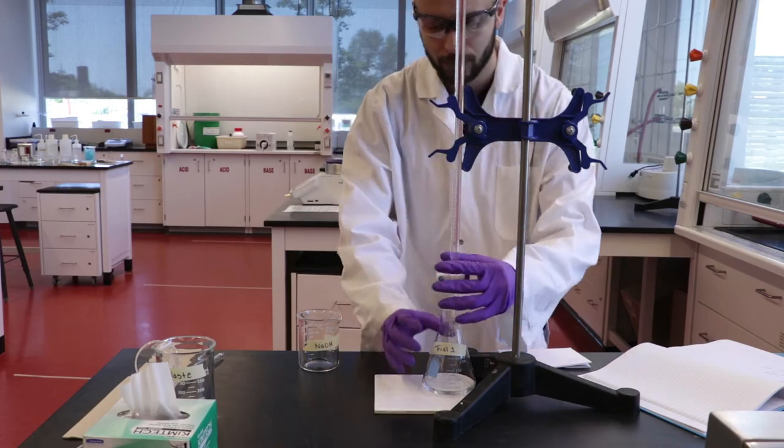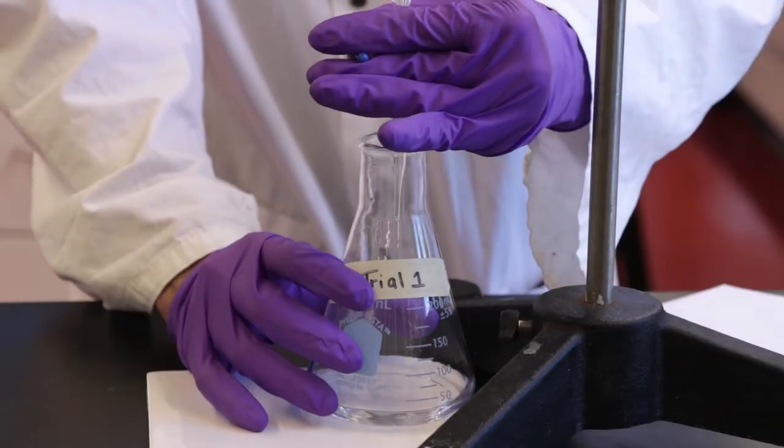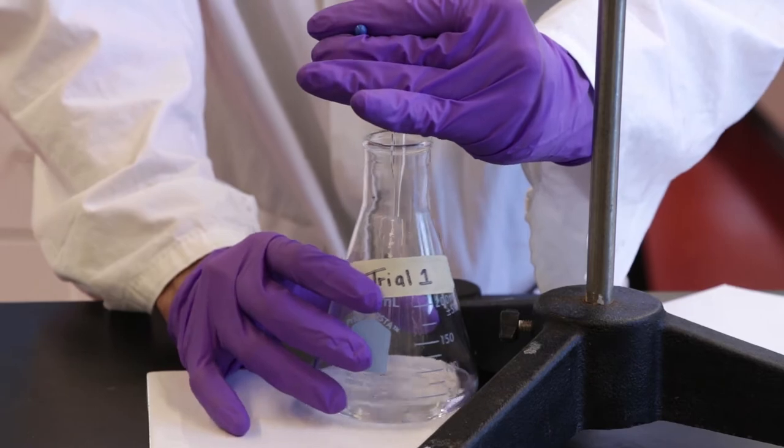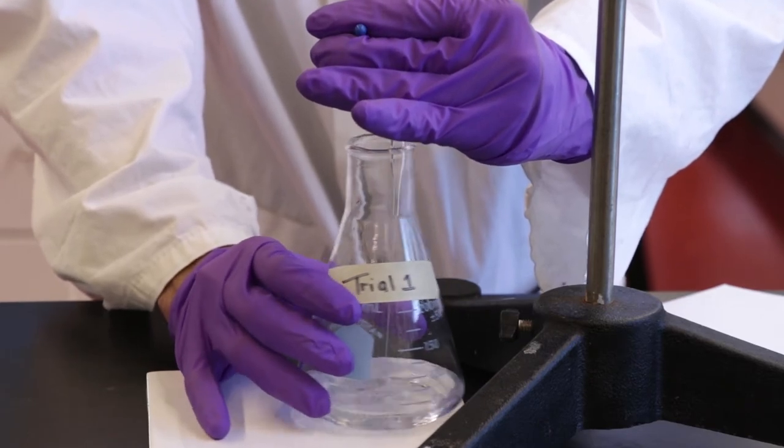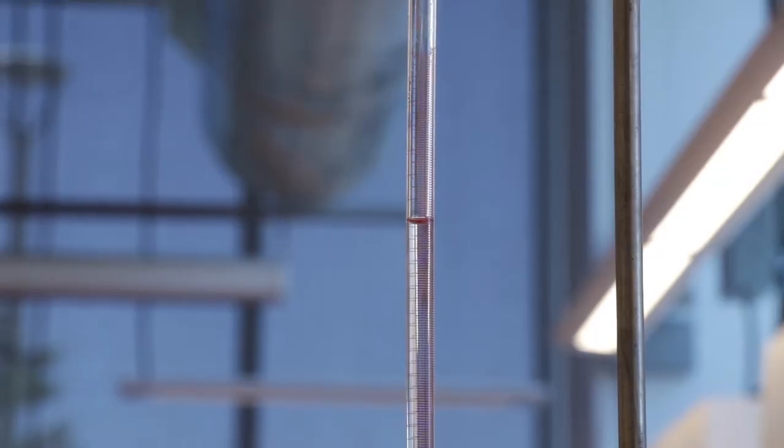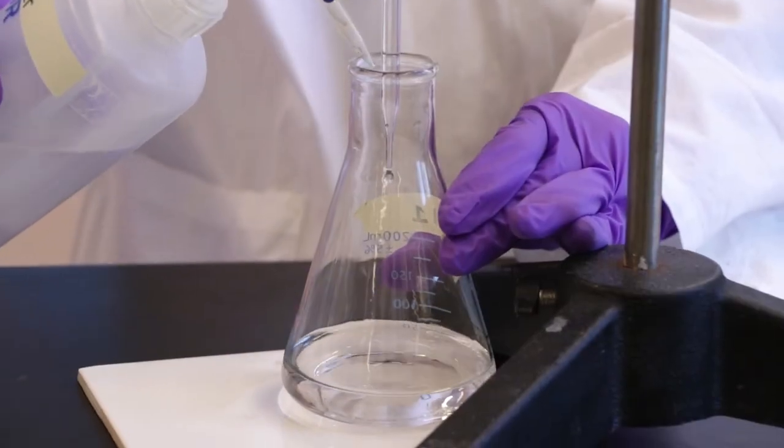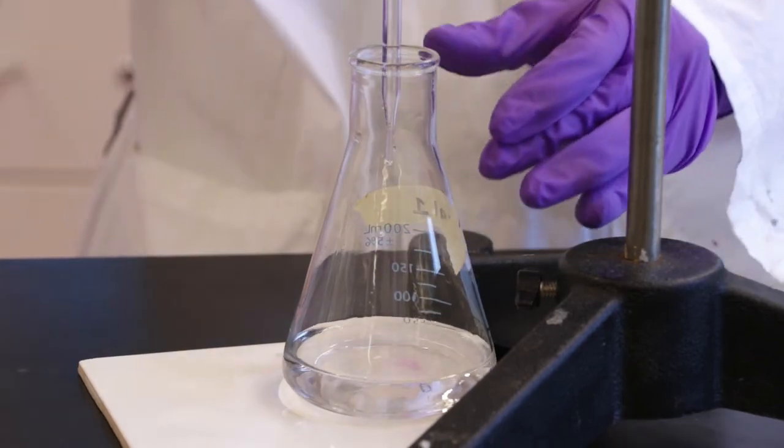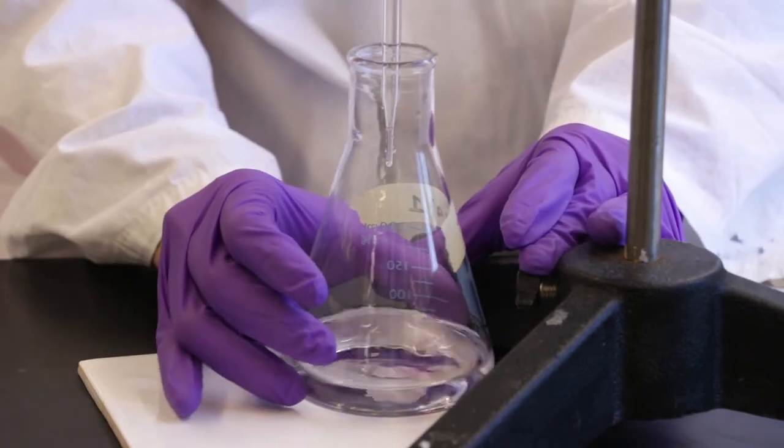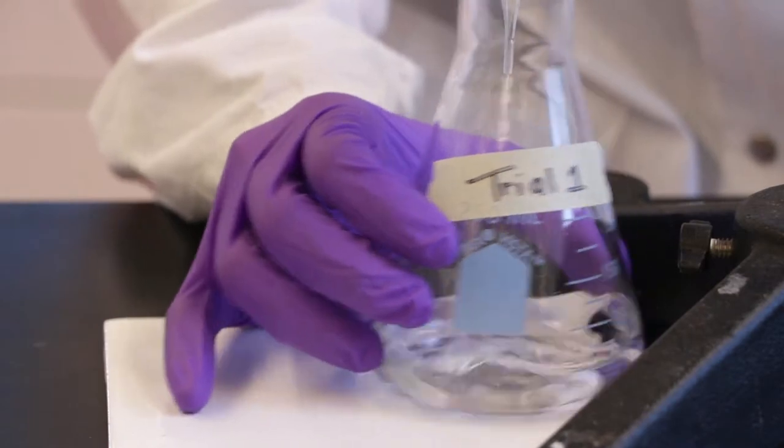Begin titrating your vinegar sample by adding the sodium hydroxide solution. Make sure that you are constantly swirling the flask while dispensing. For proper titration technique, watch our video on using a burette. Occasionally rinse the walls of the Erlenmeyer flask. Remember that increasing the volume of your solution will not affect the total number of moles of acid already in the flask.